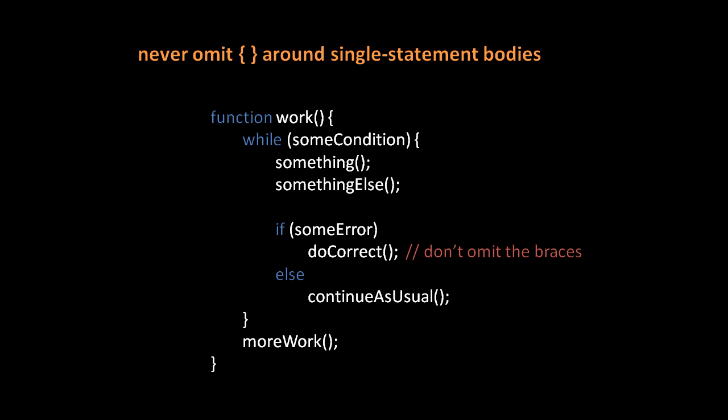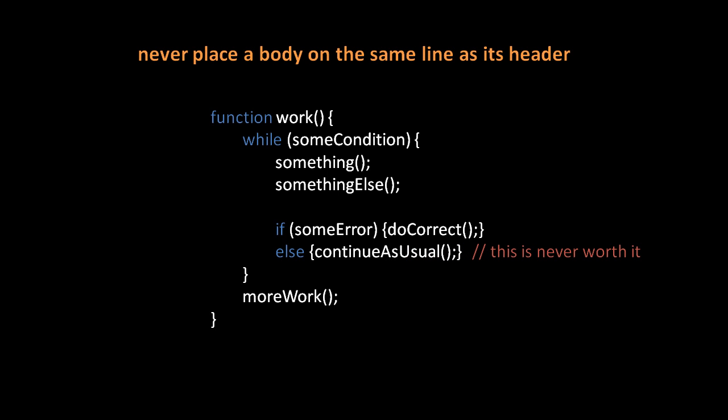Although curly brace languages like Java, JavaScript, and C all allow you to omit the curly braces of a control flow statement when there's only one statement in its body, I think you should always include the curly braces. Similarly, when a body has just one statement, some people put it on the same line as the header, but this is also something I think you should never do. Uniformity is much more important than this minor savings on vertical space. If I just stick to a set style, I'll never have to think about it when I write or read my code.